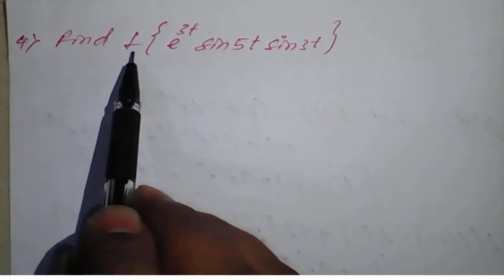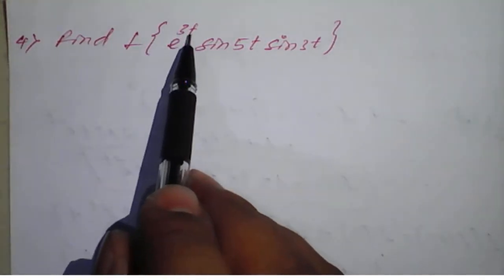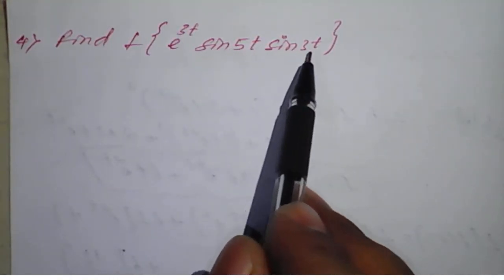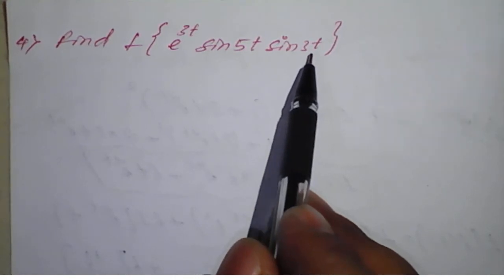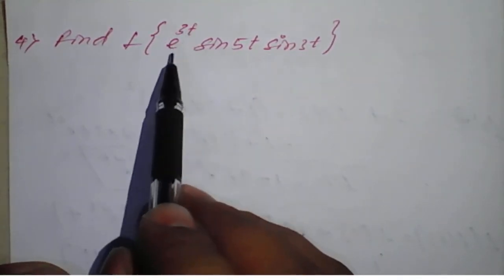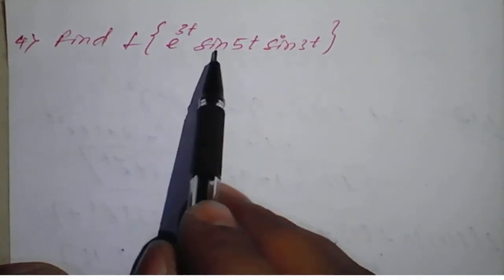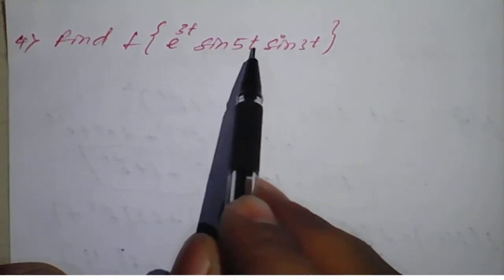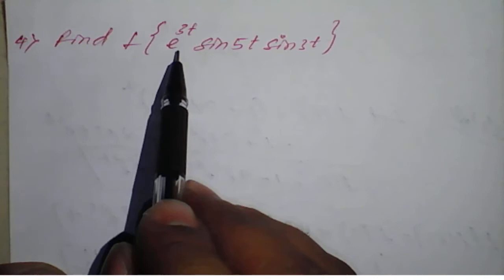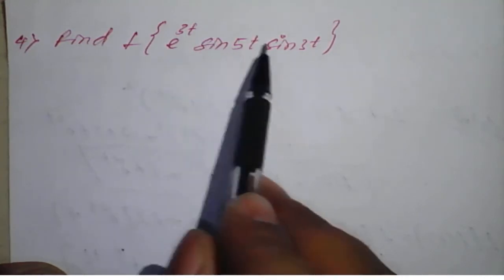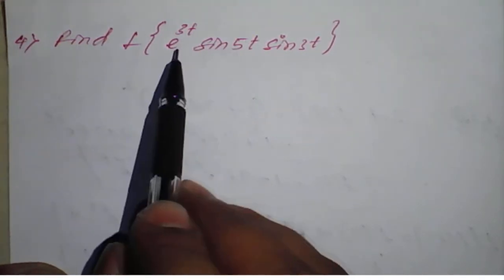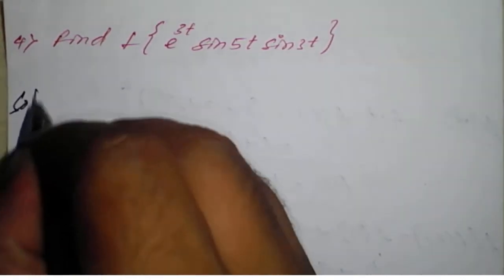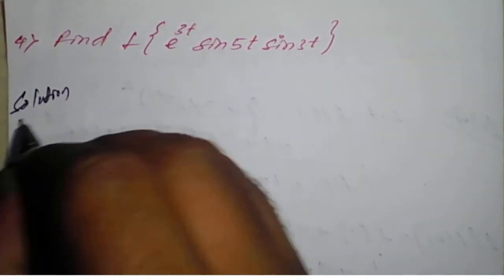We will see a few more examples based on property number 1. The problem is: find the Laplace transform of e raised to 3t into sine 5t into sine 3t. We have almost three functions here, but we can simplify first by using a trigonometric formula, then go for the Laplace transform and apply the shifting property. Let's see step by step how it works out.